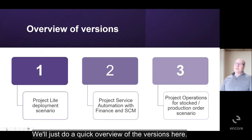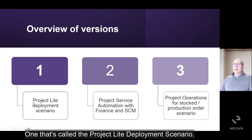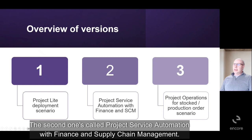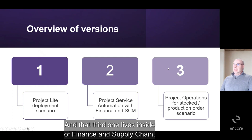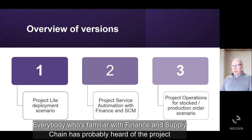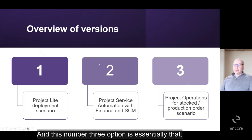There are basically three different versions of project operations. The first is called the Project Lite deployment scenario. The second is called Project Service Automation with Finance and Supply Chain Management. The third is Project Operations for the stock/production order scenario, which lives inside Finance and Supply Chain. Everyone familiar with Finance and Supply Chain has probably heard of the Project Management Accounting module — option three is essentially that.